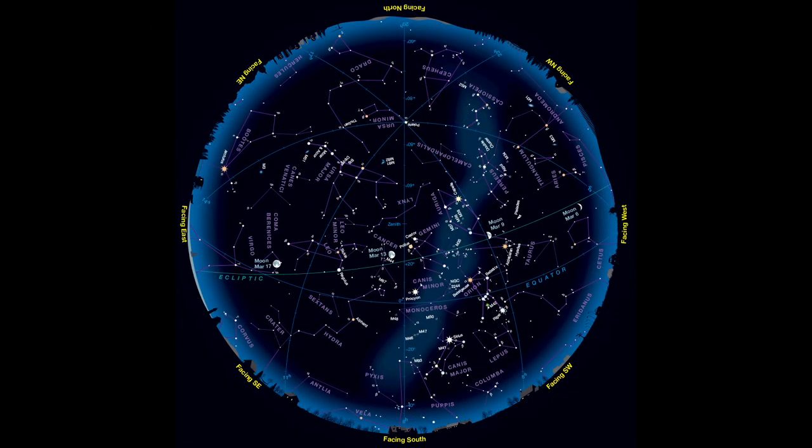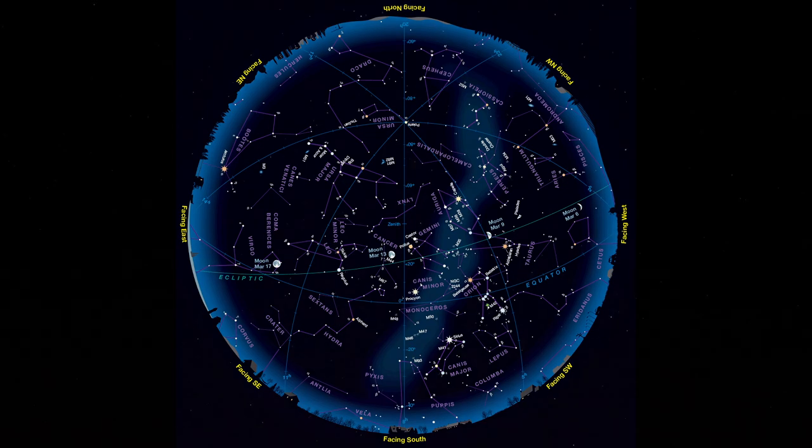Give yourself a pat on the back — you've found Sirius, Capella, Rigel, Procyon, and Betelgeuse: five of the ten brightest stars in the night sky. And six out of ten if you spotted Canopus.